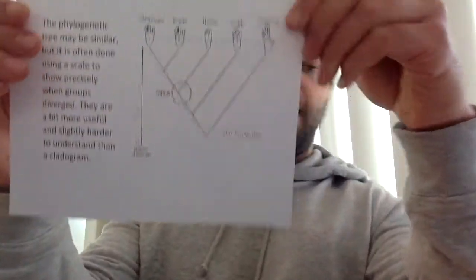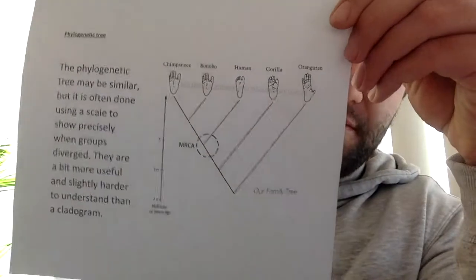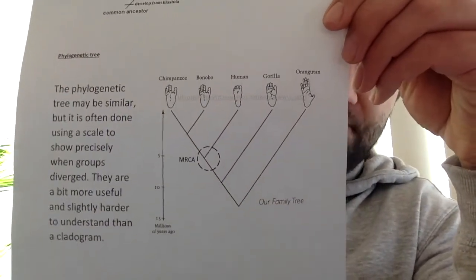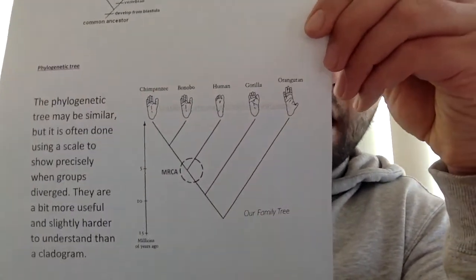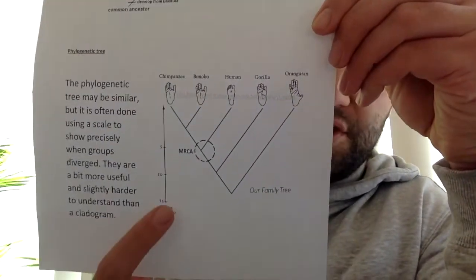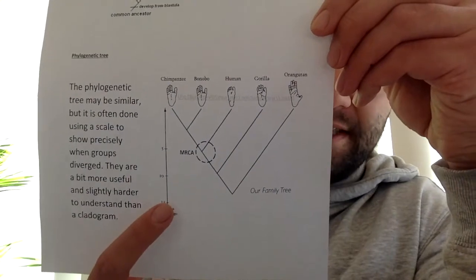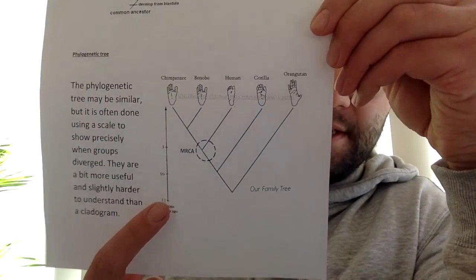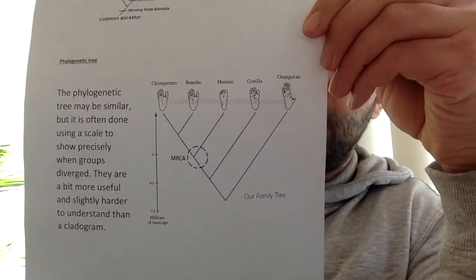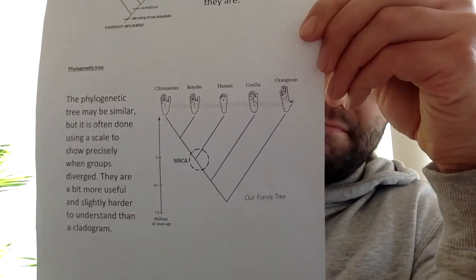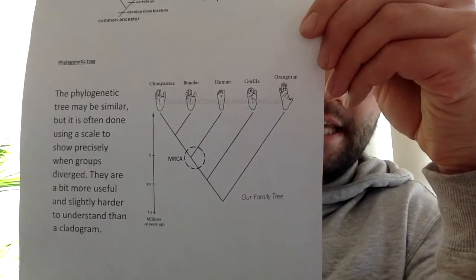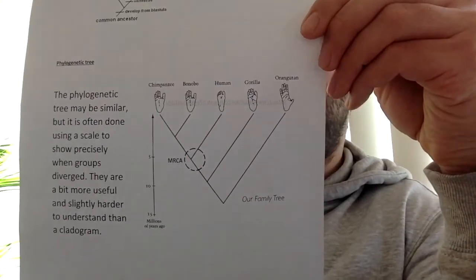A phylogenetic tree is very similar to a cladogram. They also have branches coming out as well, but they also put in a scale to show at what point the branch happened. In that way, they're a little bit more useful, and maybe a little bit harder to understand compared to a cladogram.